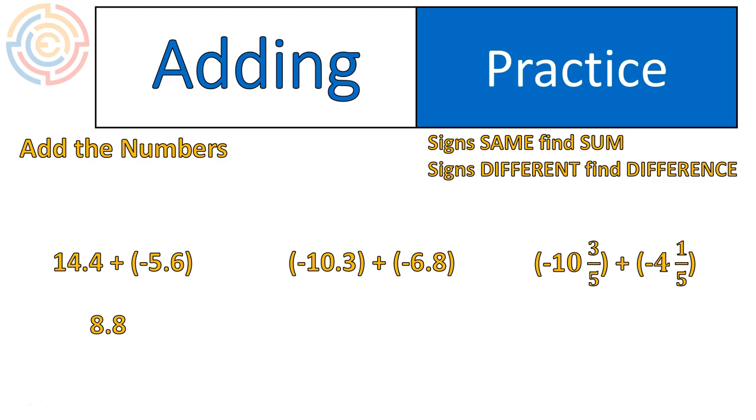Let's move on to question number two. Negative 10.3 plus negative 6.8. In this case, I'm adding a negative plus a negative. So I'm going to get an even larger negative. I just add the numbers together, keep the sign. So 10.3 plus 6.8 gives me 17.1. The answer is going to be negative.